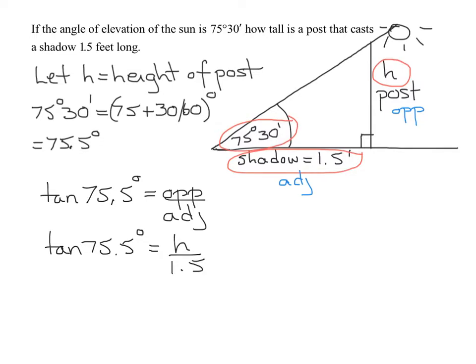So all I have to do now to get h by itself is multiply both sides by 1.5. So h is 1.5 times the tangent of 75.5 degrees.